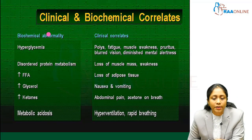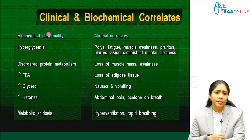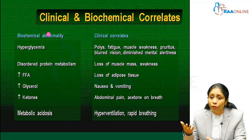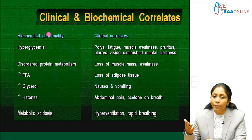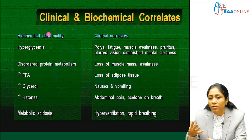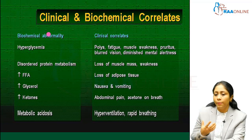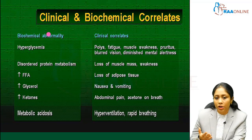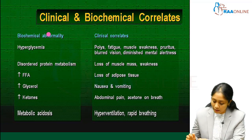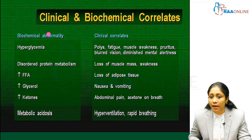The biochemical abnormalities of DKA each have clinical implications. Hyperglycemia causes polyuria, fatigue, muscle weakness, pruritus, blurring of vision, and diminished mental alertness. Disordered protein metabolism causes loss of muscle mass. Increased free fatty acids, glycerol, and ketones are responsible for nausea, vomiting, abdominal pain, and the characteristic acetone smell in the breath. Metabolic acidosis drives hyperventilation and rapid breathing, sometimes necessitating ventilatory support.